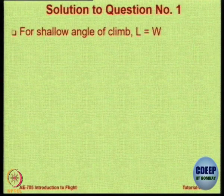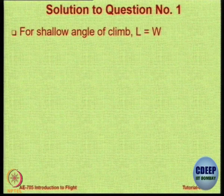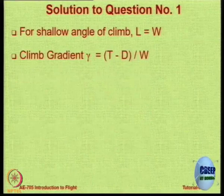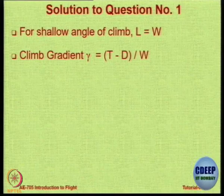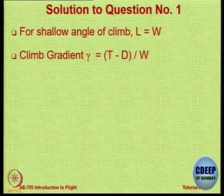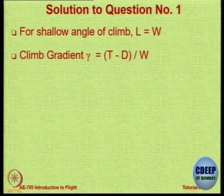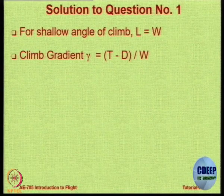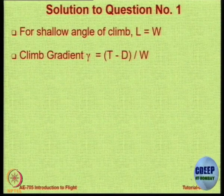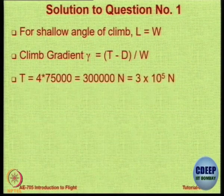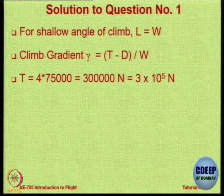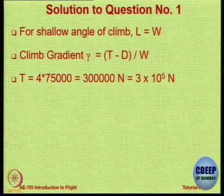For a shallow angle of climb, L = W·cosθ, and cosθ ≈ 1, so L = W. Therefore, the climb gradient is (T − D)/W — excess thrust divided by weight. Thrust is 4 × 75,000 newtons. Drag comes from L/D because L = W. The climb gradient works out to 0.133, or expressed as a percentage, 13.33%.